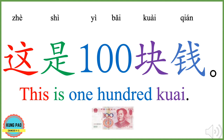这是一百块钱。 这 means this. 是 means is. 一百 means one hundred. 块 is a measure word for money. 钱 means money. This is one hundred 块.